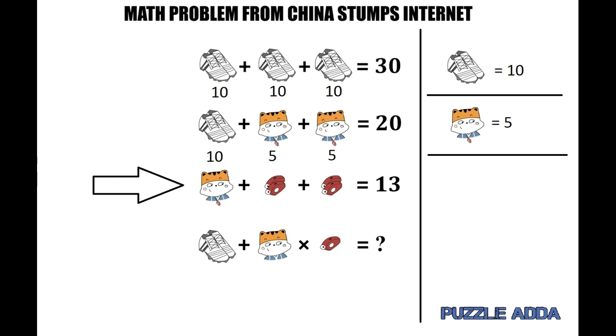Now we move to the third equation, which says a cat with a whistle plus two whistles plus two whistles equals 13. From equation 2, a cat with a whistle equals 5. Replacing that in equation 3, 5 plus two whistles plus two whistles equals 13, so two whistles equal 4, meaning one whistle equals 2.